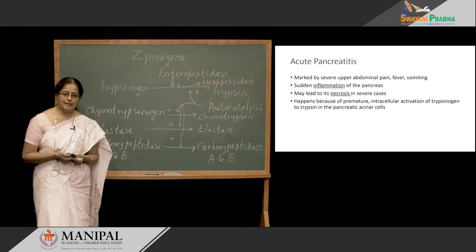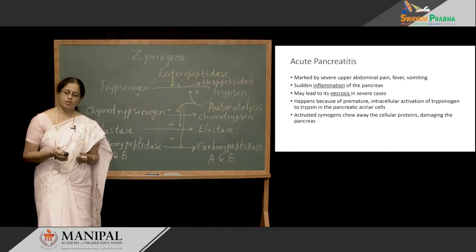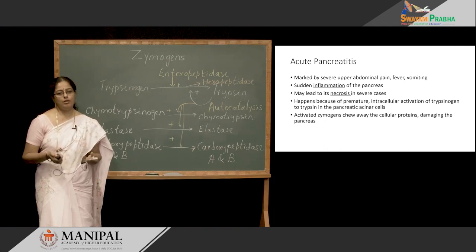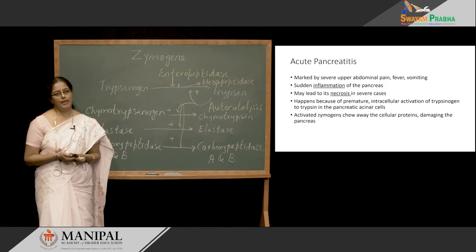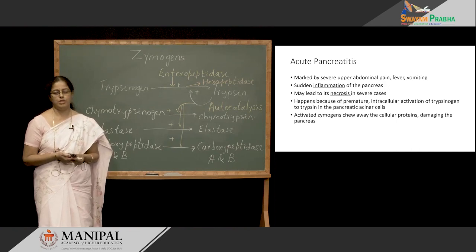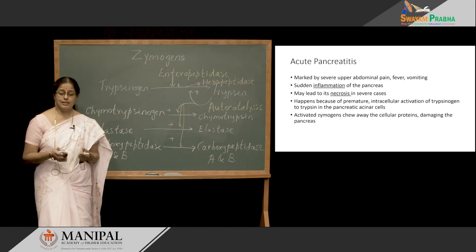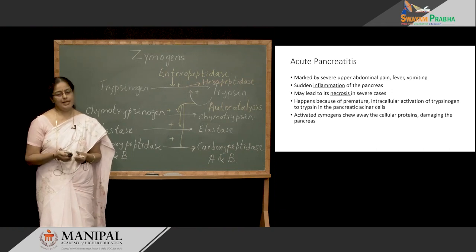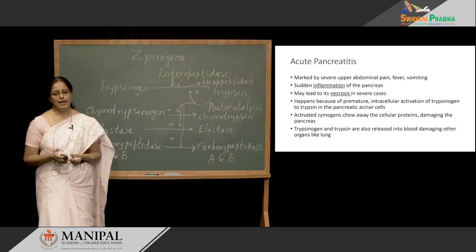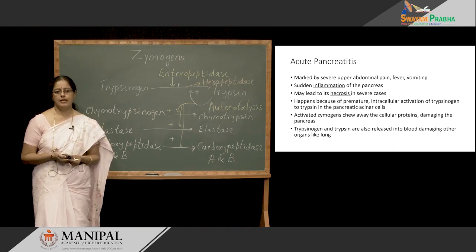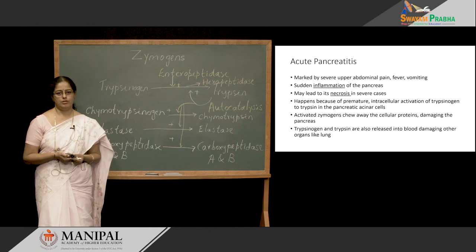These trypsin molecules will also activate other Zymogens, and all these active enzymes will start acting on the cellular proteins, thereby damaging the pancreas. These Zymogens as well as the active enzymes from the pancreas are released into the blood, circulate, and reach different organs like the lungs, causing their damage.